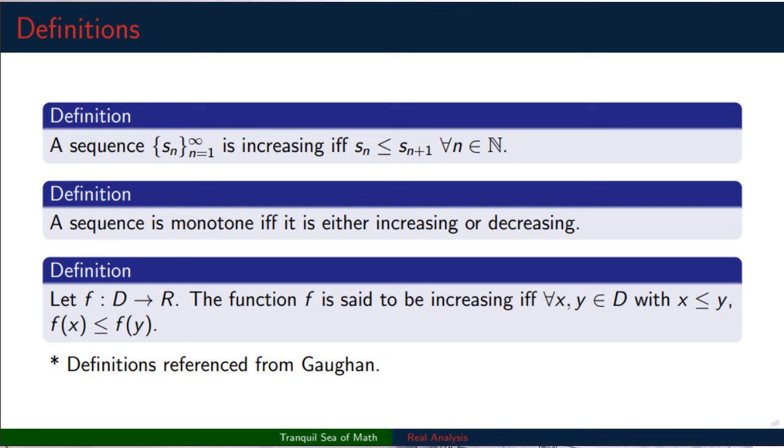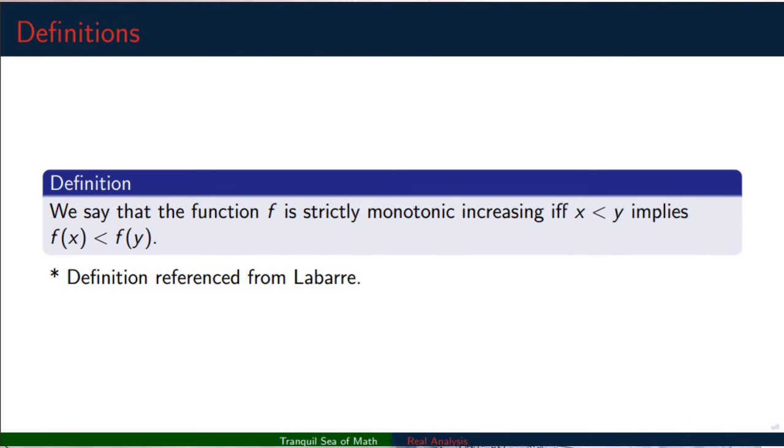So you will see that I have my first three definitions I'm pulling from Galgen. So definition one talks about how we define a sequence to be increasing. Definition two discusses what we mean when we introduce the word monotone as a part of a descriptor. And then definition three is specifically about a function that is increasing. And hopefully you can see some of the relationship between these three definitions. We then go over to Labar for our fourth definition. And this is again about a function, but now we are saying that the function is strictly monotonic increasing. So we're bringing in the descriptors from the first three definitions and adding this other descriptor of strictly.